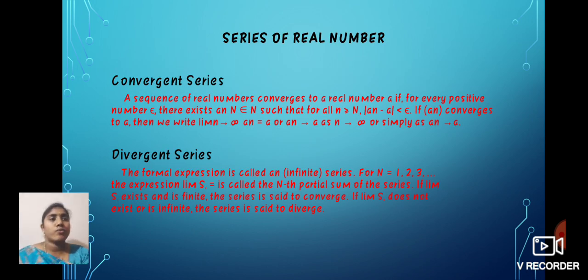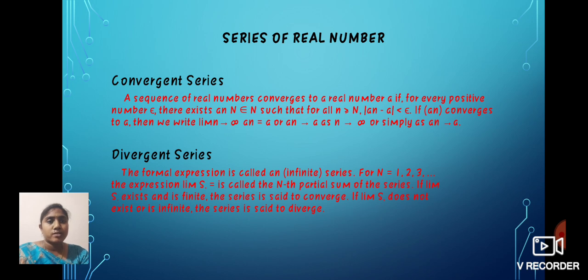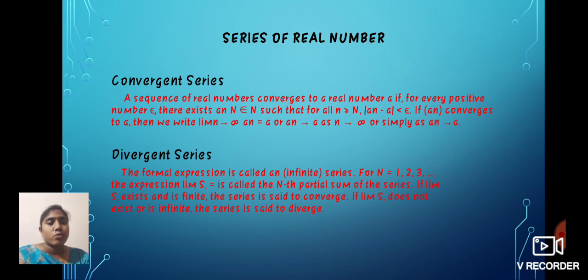Next, we define the series of real numbers. We discuss convergent and divergent series. First, we define convergent series. A sequence of real numbers converges to a real number A if for every positive number epsilon, there exists N belongs to N such that for all n greater than or equal to N, |An - A| is less than epsilon. If {An} converges to A, then we write lim n→∞ An = A. The infinite series is formed for n equal to 1, 2, 3, and so on. The expression limit S is called the n-th partial sum of the series. If the limit S exists and is finite, the series is convergent. If the limit S does not exist or is infinite, the series is divergent.